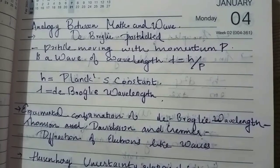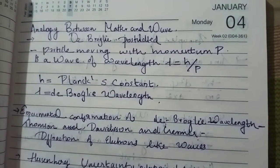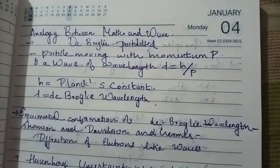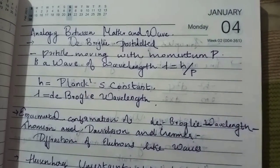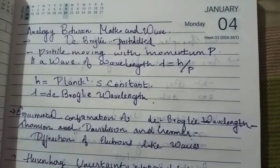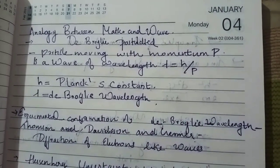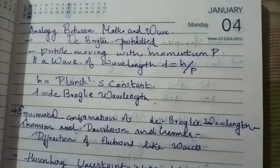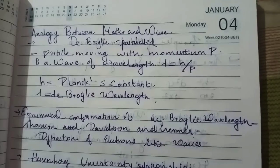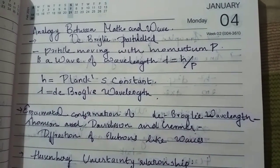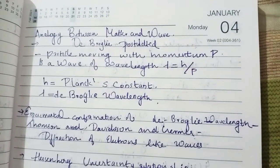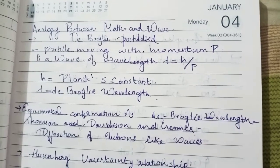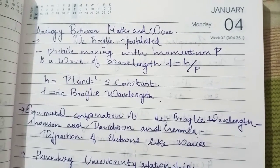We need to clarify the difference between matter and wave, and the relation between them. The de Broglie postulation states that a particle moving with momentum P has a wave of wavelength lambda equal to H divided by P. So a particle which has momentum P should possess a wavelength lambda equals H over P, where H is Planck's constant and lambda is the de Broglie wavelength. The experimental confirmation of de Broglie's hypothesis by Thomson and by Davisson and Germer showed the diffraction of electrons — that electrons are particles and they also behave like waves.